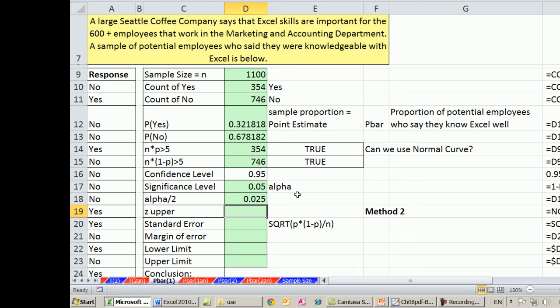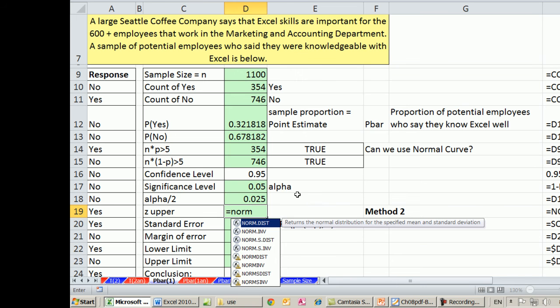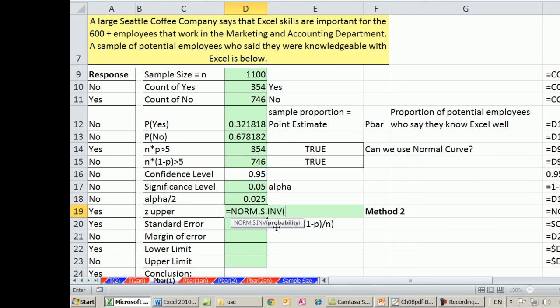We'll calculate our z on the upper end, and we can use equals norm. There's norm dot inverse, but norm s inverse gives us the z. Now the probability, we need all the probability minus the little bit on the upper end, so we'll say 1 minus. So there's our upper 1.96 approximately.